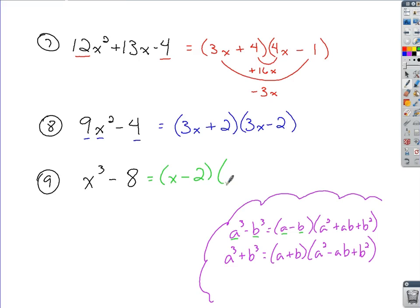Once I know that, setting up the rest of this, you've got X squared then, plus A times B, so it's two times X, plus B squared. Let's see, B squared is going to be two squared, so four. There's your factorization for a difference of cubes.